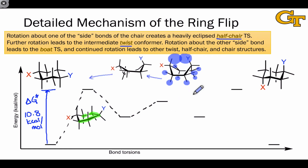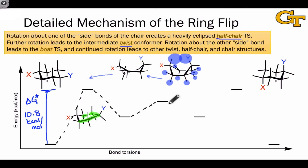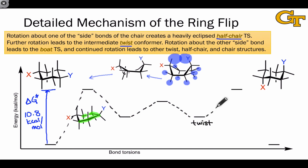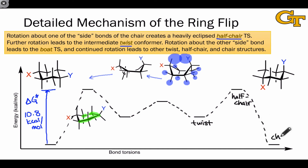At this point we've reached a symmetrical structure, and so the remainder of the mechanism is symmetrical with respect to the first half. There is a decrease in energy as this boat conformer converts to another twist conformer, which is yet another intermediate. That twist conformer then converts to a different half chair, and finally that half chair rotates into the final alternate chair form.